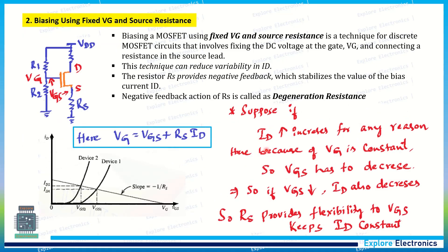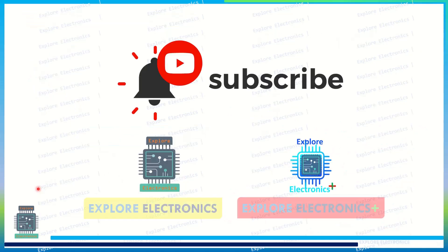This is the advantage of fixed VG and allowing the VGS to be flexible and having a constant source resistance. This method can be used in place of fixed VG method. Thank you.